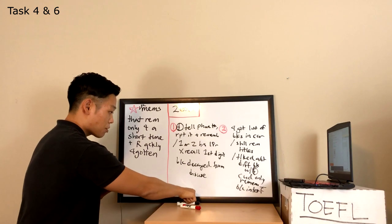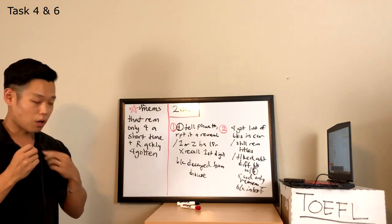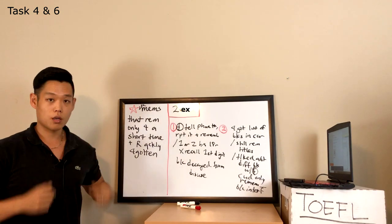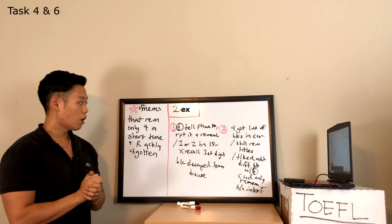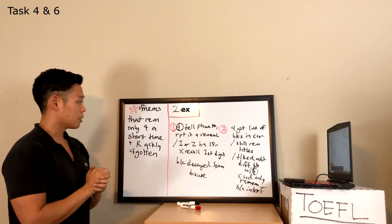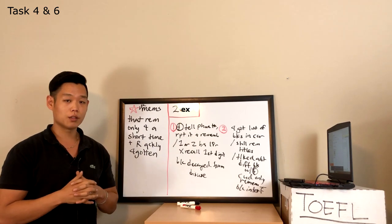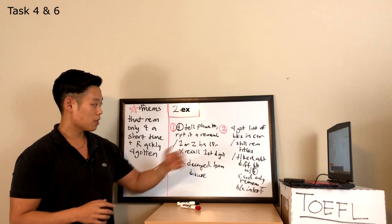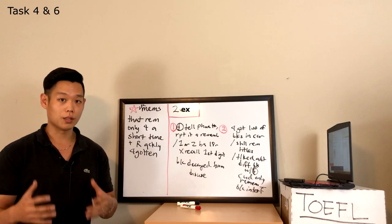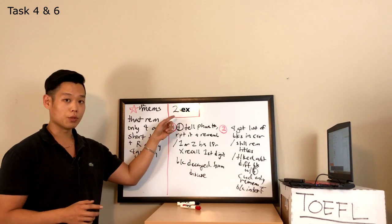Now, in the lecture, the professor said that there are two reasons as to why people forget their short-term memories quickly. But in the end, you guys should have also realized that the professor basically gave us two examples. One example was hypothetical, and the second example was something that she personally experienced in her life. So, it's two examples, okay?